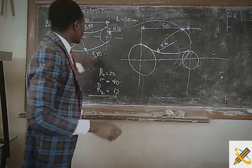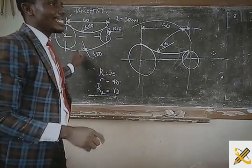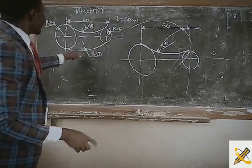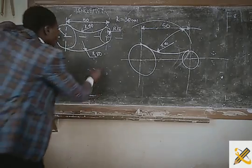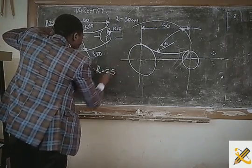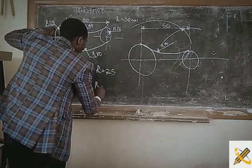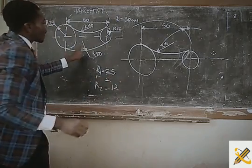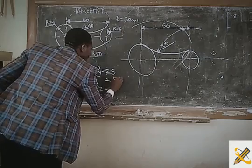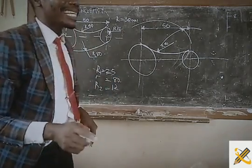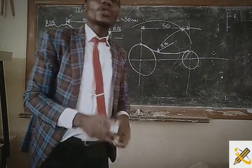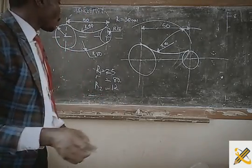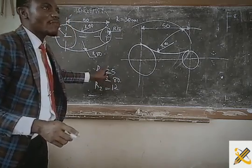This bottom arc is an internal arc. How do we get that? At the bottom, R = 25, the second part R = 12, and the arc radius R = 80. To get an internal arc, we apply the principle of subtraction.